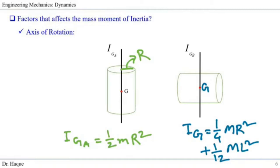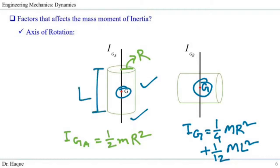The next factor is axis of rotation direction. For this cylinder, the axis of rotation goes through the longitudinal direction, passing through the mass center. On the other figure, the axis is along the side of the cylinder. This affects the mass moment of inertia. For the first orientation the mass moment of inertia is ½mr², which does not depend on the length L. But if you change the direction of rotation, it depends on both the radius r and the length L of the cylinder.